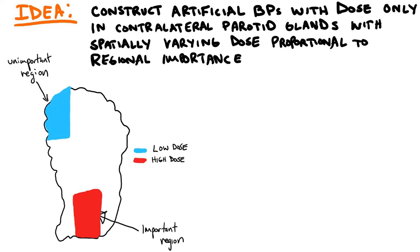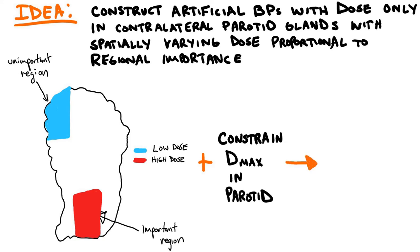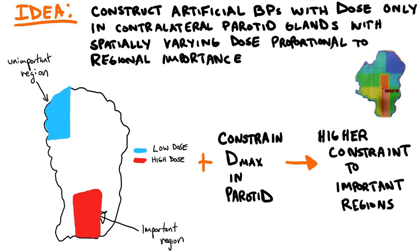These plans can be used to trick the optimizer into thinking that more important parotid gland regions have already received more dose than less important regions. And if the planner sets an upper bound dose constraint for the parotid gland, important areas will be preferentially spared over unimportant areas.